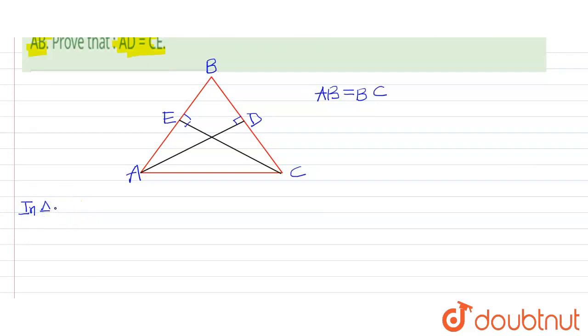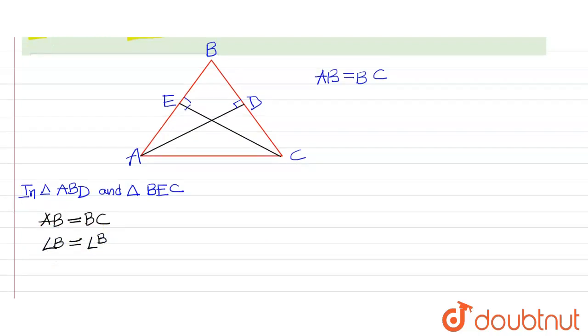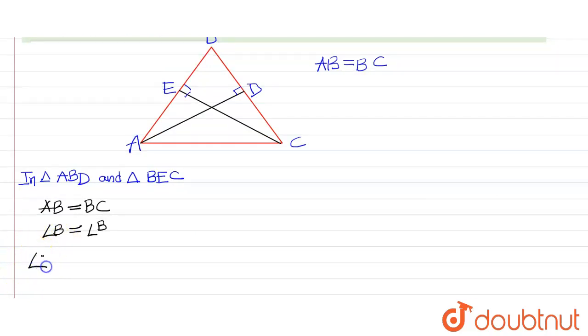Let's proceed. In triangle ABD and triangle BEC, we can see that AB is equals to BC, and angle B is equals to angle B, the common angle. Next we can see that angle BDA is equals to angle BEC. Therefore, from this part I can conclude that triangle ABD is congruent to triangle BEC.